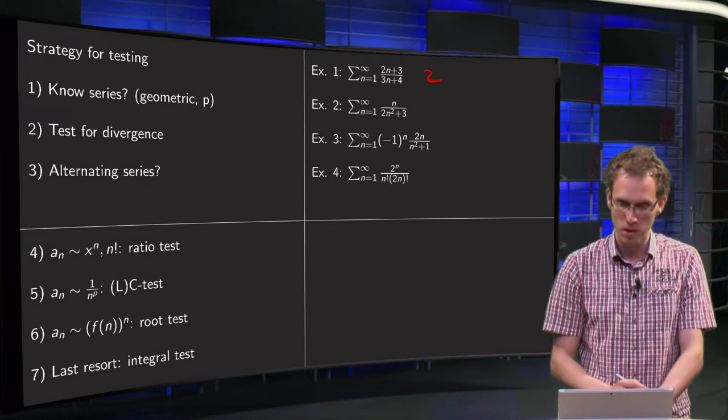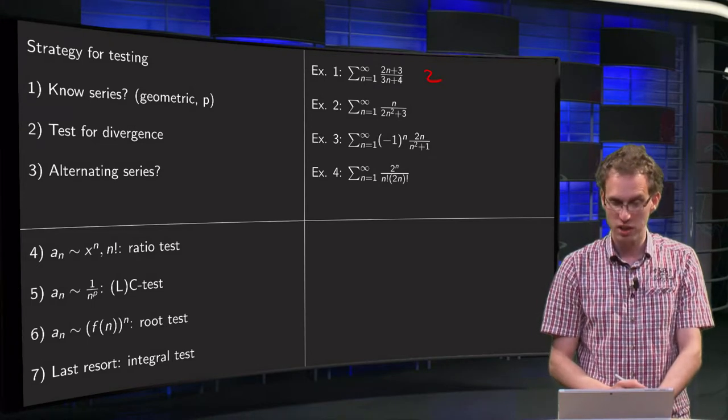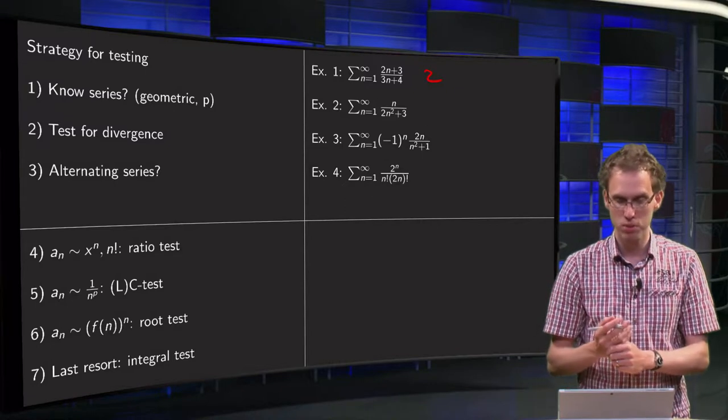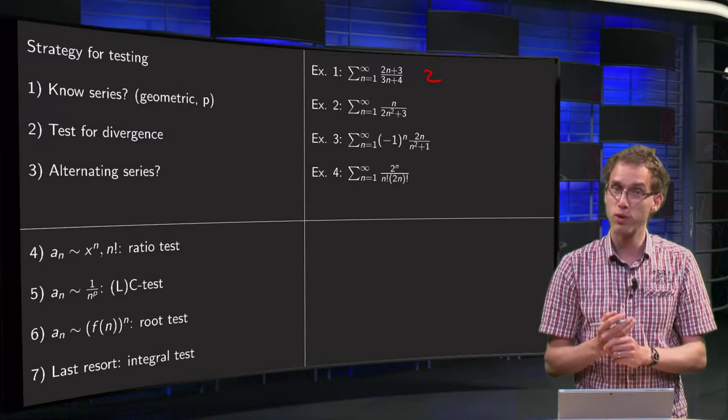Next one, example two. It is not a known series. If n tends to infinity terms go to zero, it is not alternating, so that will work.